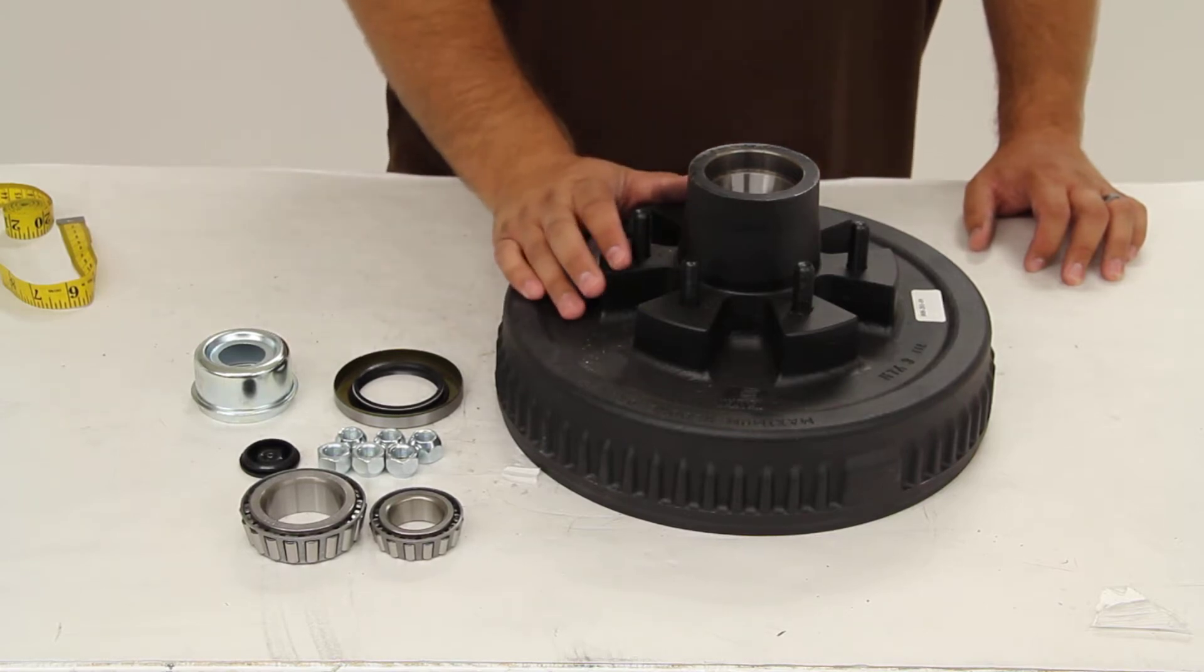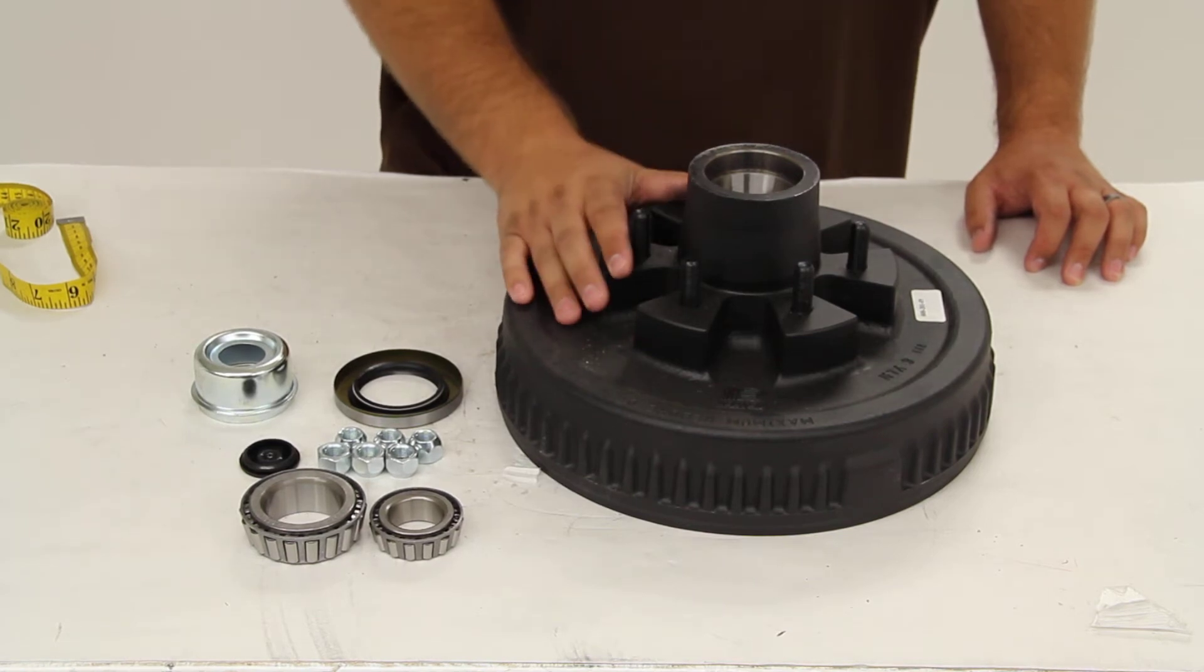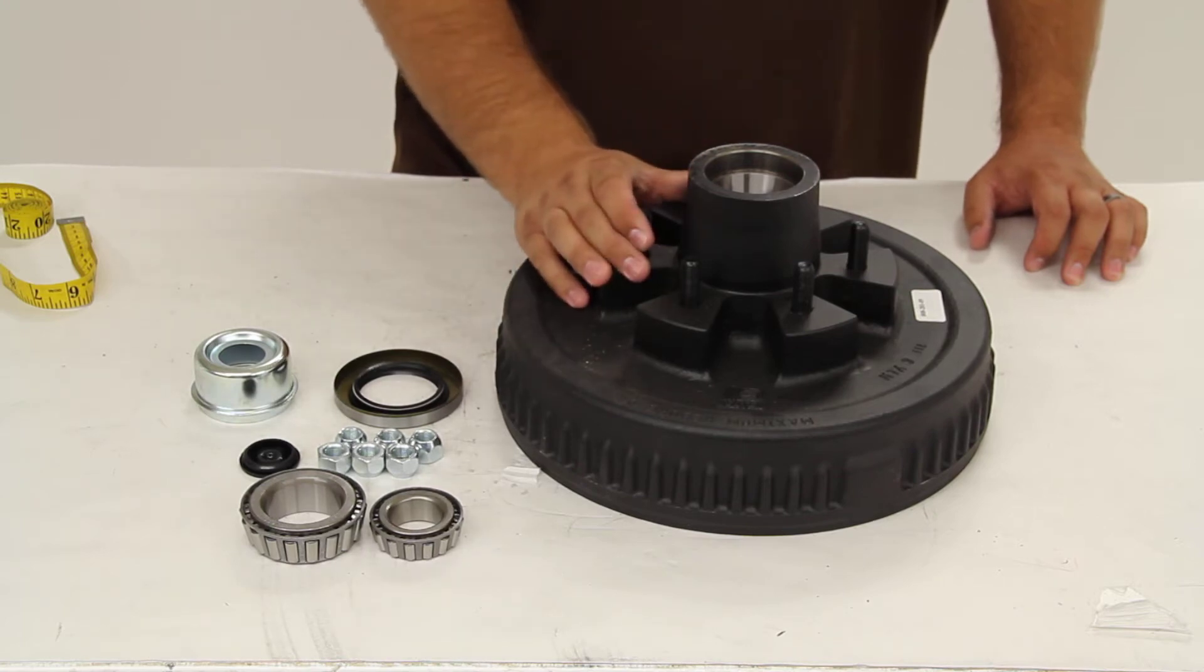This drum is designed to work on 5,200 pound and 6,000 pound axles. The drum's capacity itself is 3,000 pounds, so when you pair it up with another drum on the other side of the axle, you'll get your 6,000 pounds total capacity.